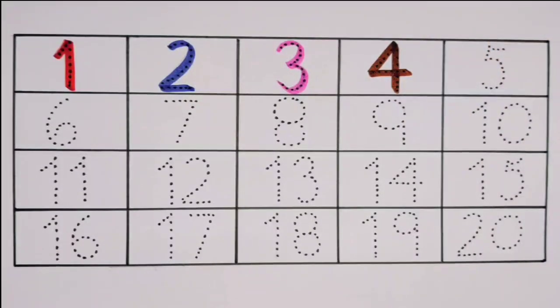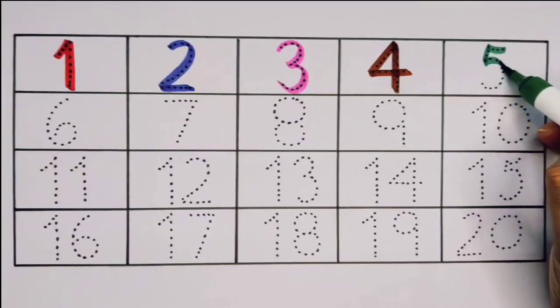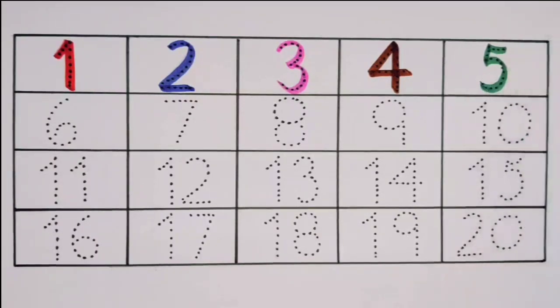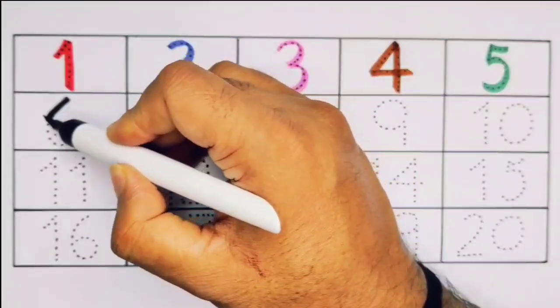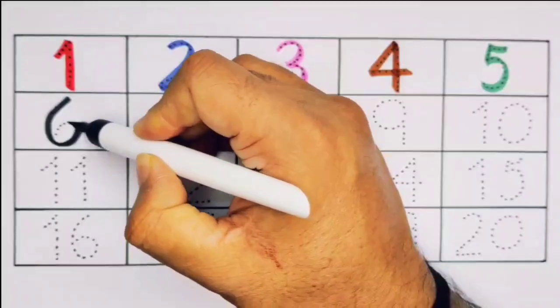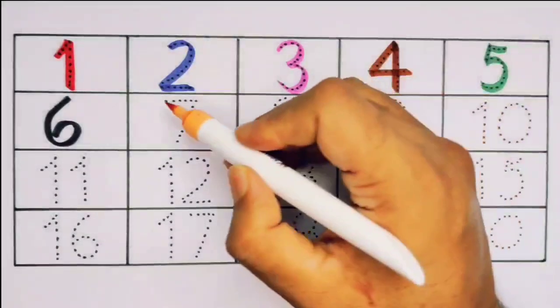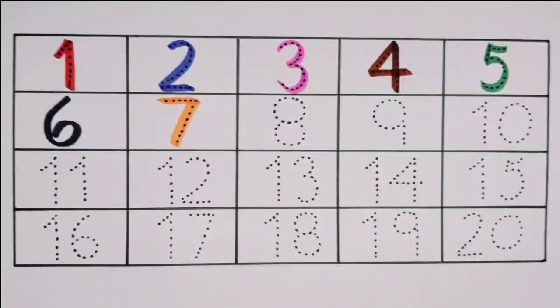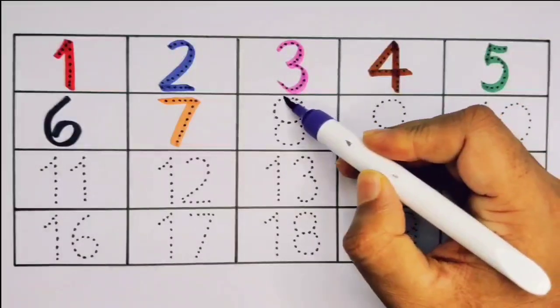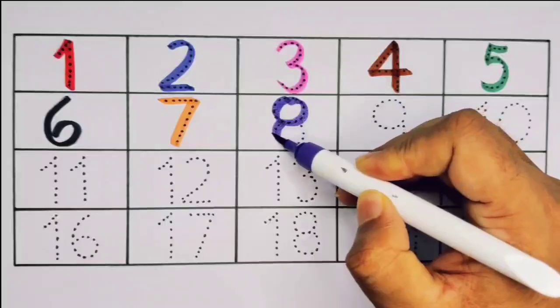Next kids, it's 5. Number 5. Next kids, it's 6. Number 6. Next kids, it's 7. Number 7. What will come next kids? It's 8. Number 8.